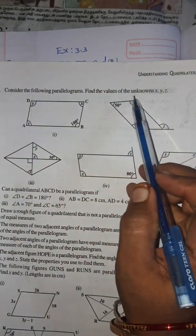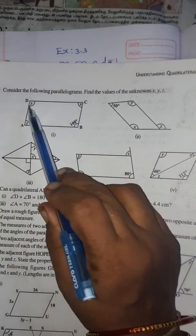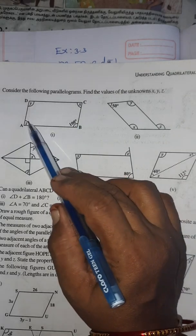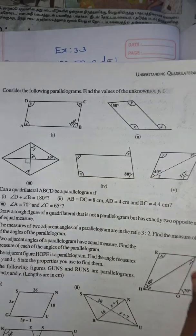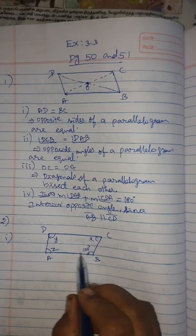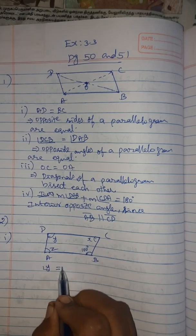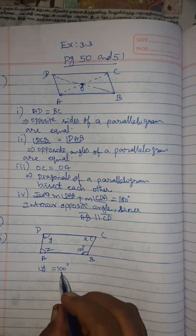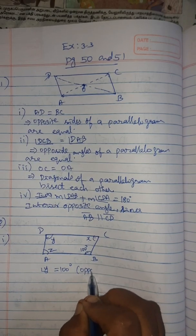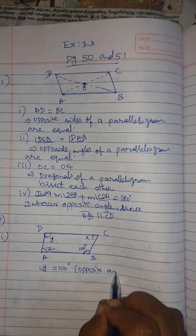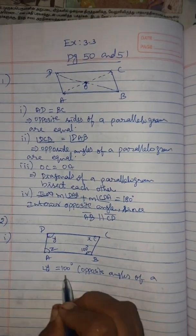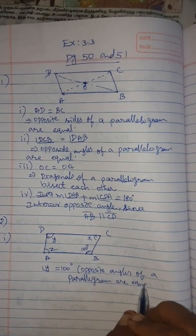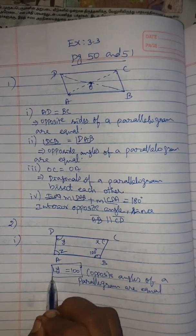Second sum: consider the following parallelogram, find the values of unknown X, Y, Z. Angle B is given as 100 degrees. Angle Y will be equal to 100 degrees, because opposite angles of a parallelogram are equal. So Y equals 100 degrees.